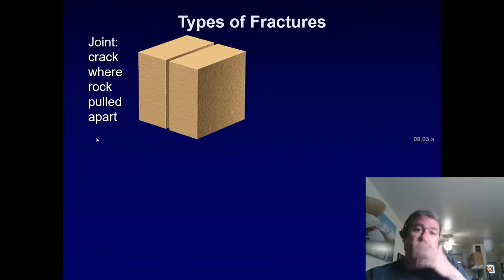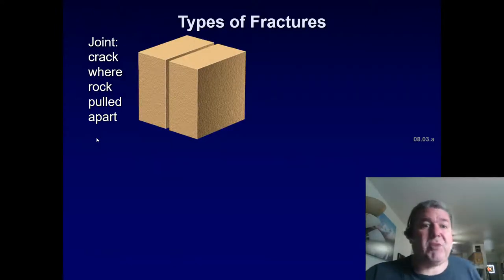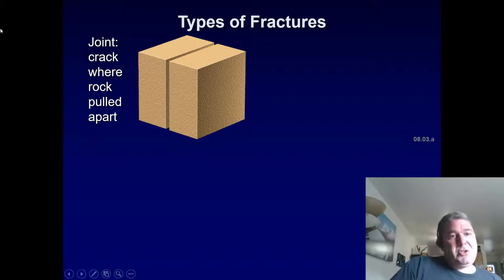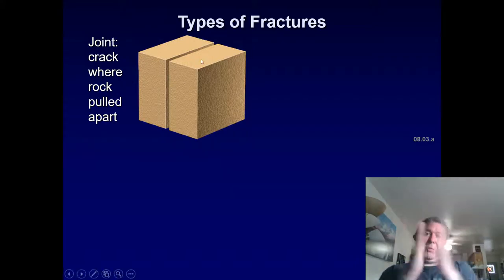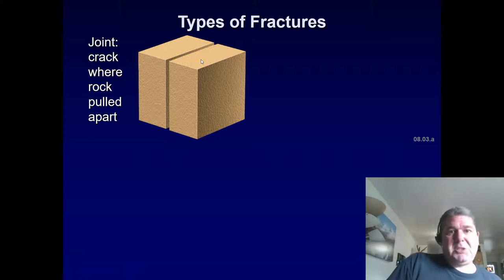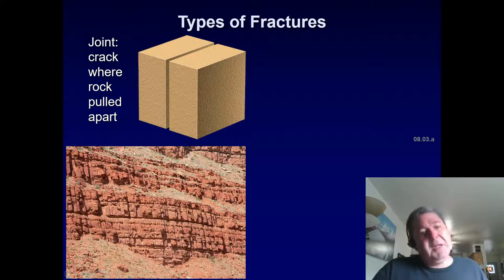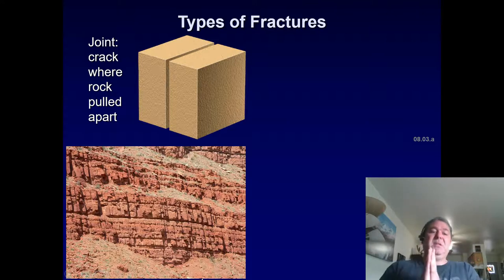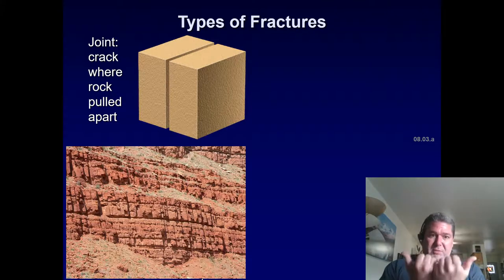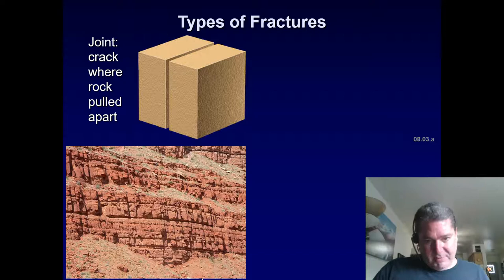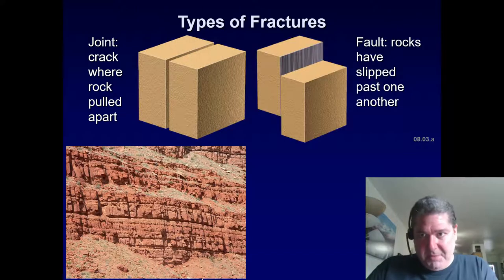A joint is where a crack is pulled apart — it indicates a space issue, so the rock breaks or pulls apart. Here's an example of sets of joints running parallel to each other, which reflects a specific tensional or divergent type of stress.